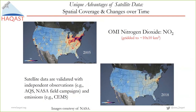There are unique advantages of satellite data over surface monitoring networks like EPA's Air Quality System (AQS): spatial coverage and the ability to monitor how air pollution changes over time. Here is nitrogen dioxide from the Ozone Monitoring Instrument (OMI) on the NASA Aura satellite, gridded to 10 by 10 kilometers squared. In the upper left is an annual average from 2005, and in the lower right, 2018. You can very clearly see that satellite data show environmental regulations in the U.S. are working — the air is becoming cleaner.